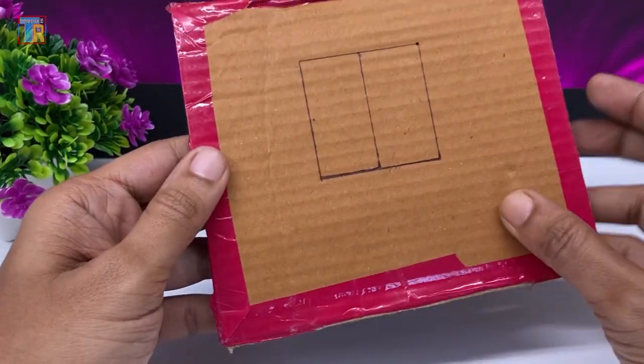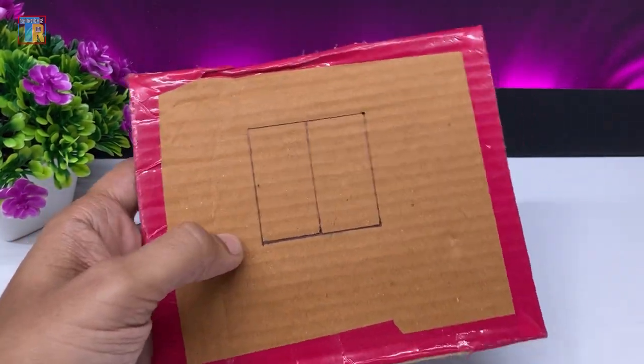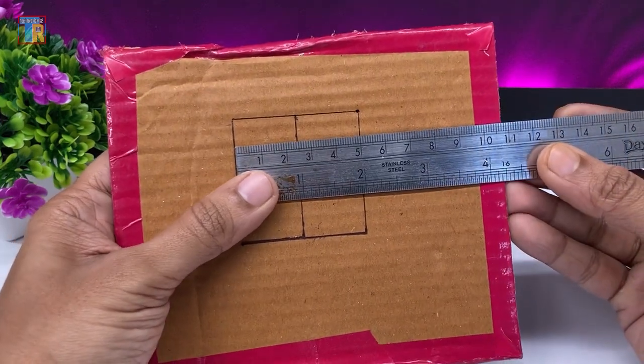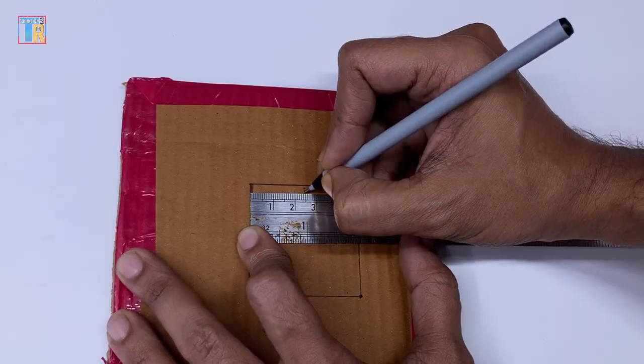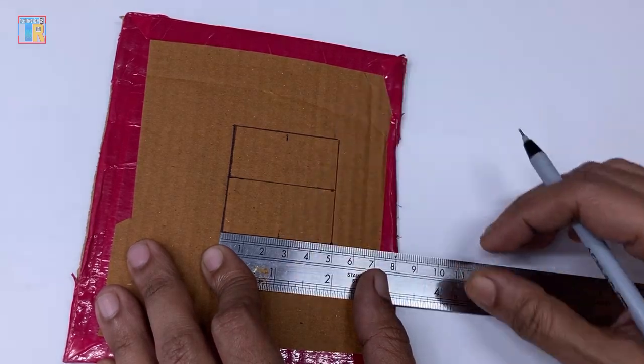Take ordinary cardboard and draw a 5cm x 5cm box. You can see this box is divided into two parts. I am dividing it again from the middle.